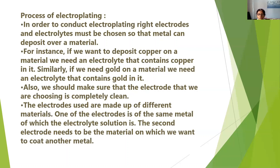In order to conduct electroplating, we have to choose the right electrodes and the right electrolyte so that the metal can be deposited over another metal. For example, if we want to deposit copper on a material, we need an electrolyte that contains copper in it. Similarly, if we need gold on a material, we need an electrolyte that contains gold. We should also make sure the electrode we are choosing is completely clean. One electrode should be of the same metal as the electrolyte solution, and the second electrode needs to be the material on which we want to coat the metal.